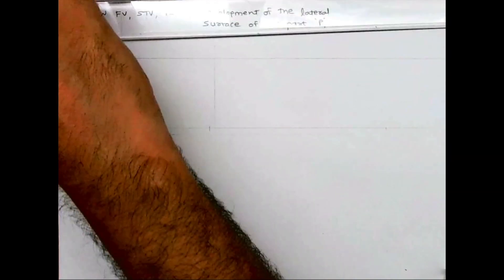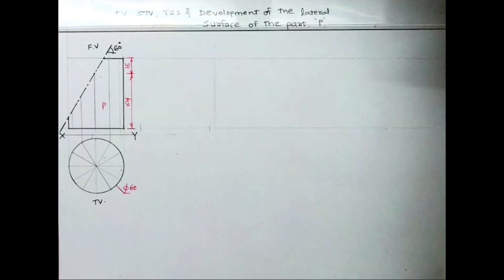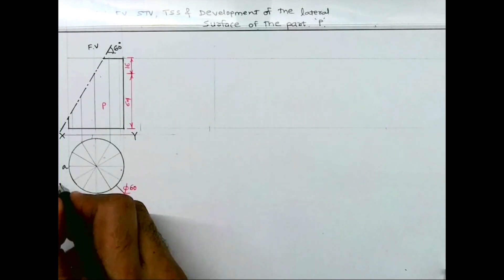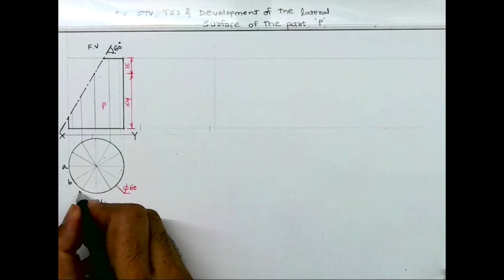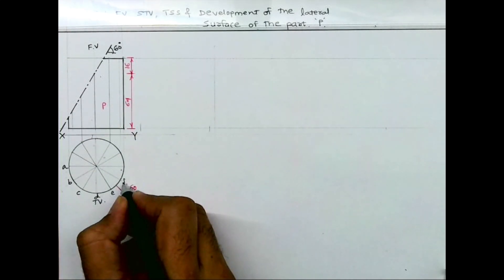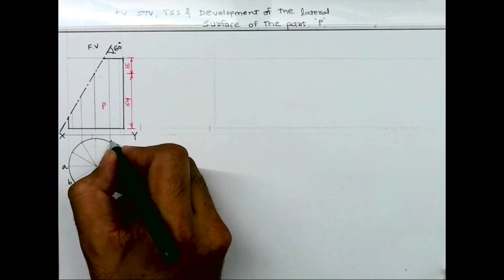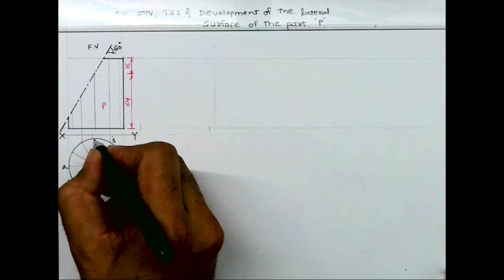Now after that we'll name the points: A, B, C, D, E, F, G, H, J.